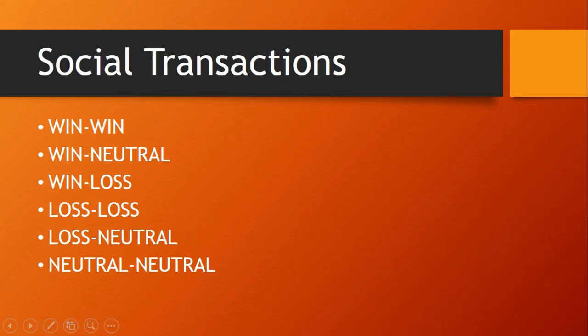A business transaction is just a type of social transaction, and all social transactions form one of six relationships: win-win, win-neutral, win-loss, loss-loss, loss-neutral, and neutral-neutral. Win means they gained, loss means they lost something, and neutral means nothing happened to them.